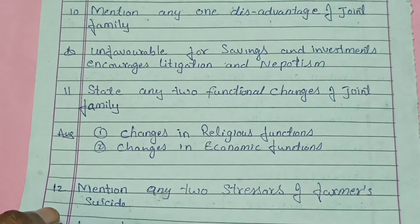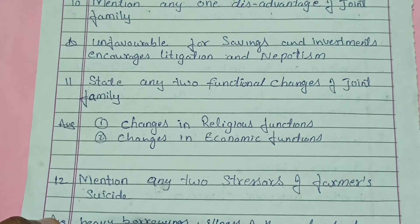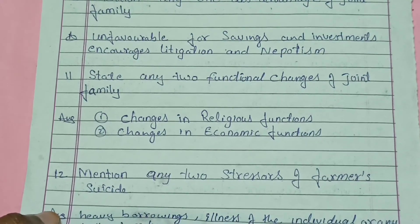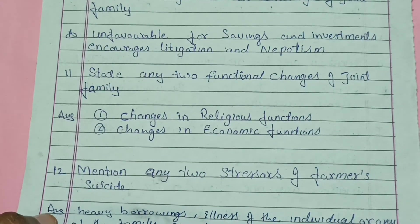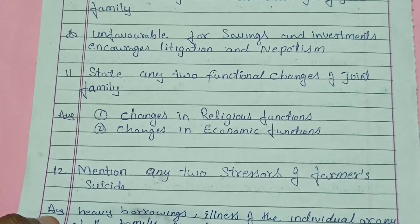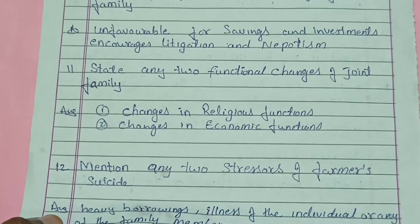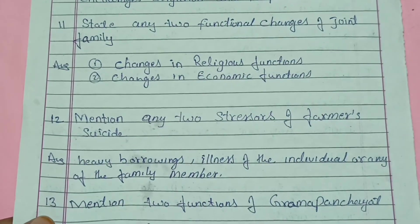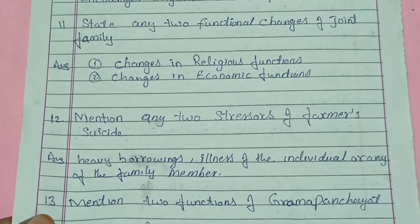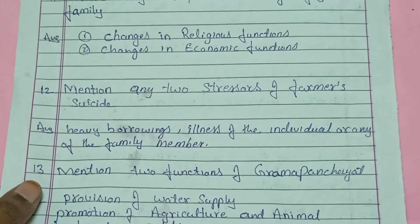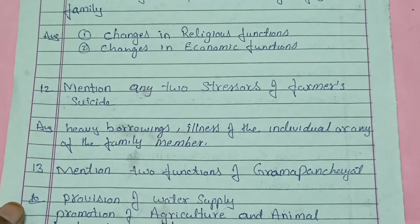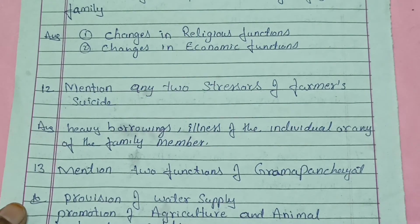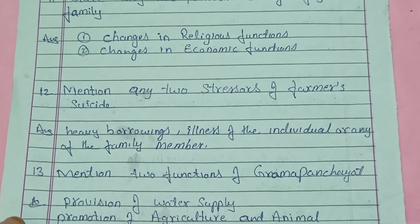State any two functional changes of joint family. The functional changes are: changes in religious function, changes in recreational function, and changes in economic function — write any one or two. Mention any two stressors of farmer suicide: heavy borrowings, and illness of the individual or any family member of the farmer.